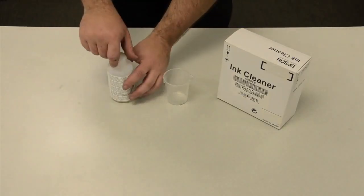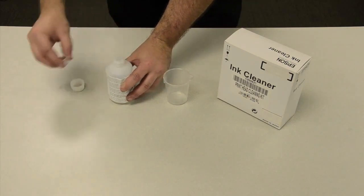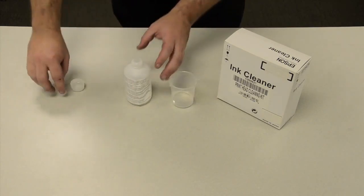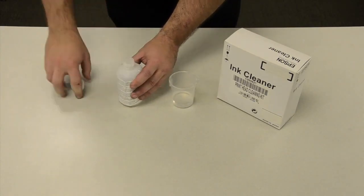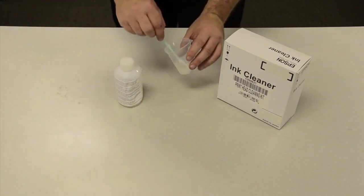In preparation for cleaning the print head, we will remove the cap and remove the safety cap to the ink cleaning fluid. We will then pour a small amount into our plastic beaker. To avoid accidentally spilling any of the cleaning fluid, please replace the safety cap and the cap to the bottle.